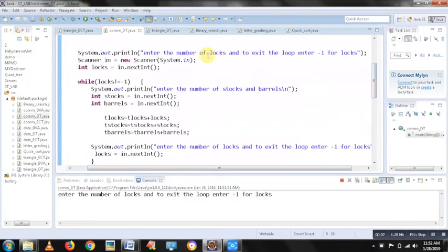First, we ask the user to enter the number of logs and read it inside a variable called log. While log is not equal to minus 1, we repeatedly read stock and barrel. Every time you read log stock and barrel, I would compute that into variables, total log, total stock and total barrel.